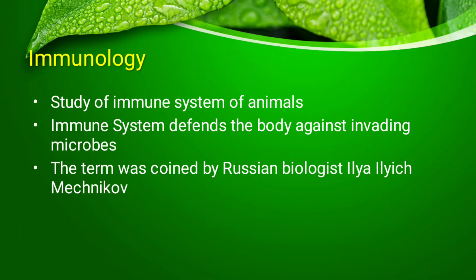The next branch is immunology. Immunology is the study of the immune system of animals. The immune system defends the body against invading microbes. In any organism, usually animals, when a microorganism enters, there is a system that fights against it and kills it — that system is called the immune system, and studying it is called immunology. This term was given by the Russian biologist Ilya Ilyich Mechnikov. White blood cells are part of the immune system.